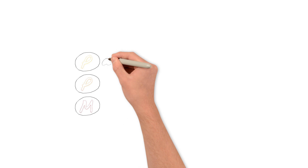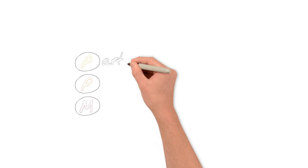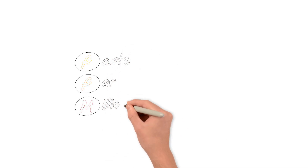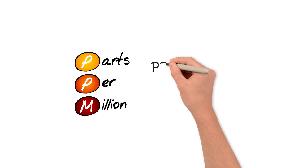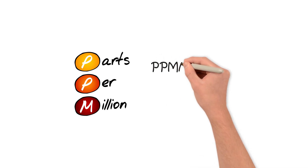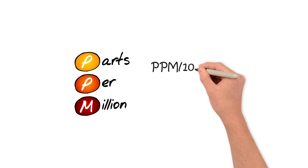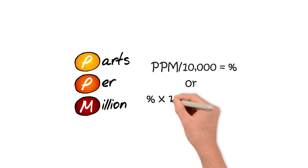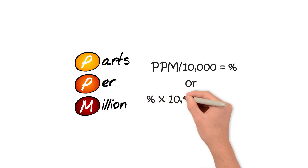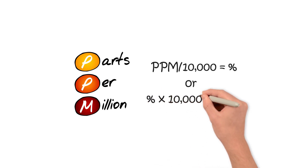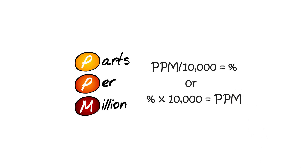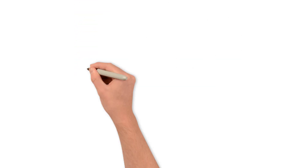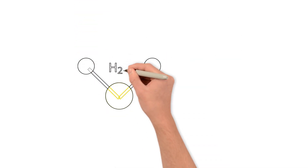You can see how it makes more sense to use PPM as opposed to percent measurement when dealing with such small quantities. If you need to convert PPM to percent, simply divide the PPM value by ten thousand. Or if you need to go the other way, multiply the percent value by ten thousand to get PPM.